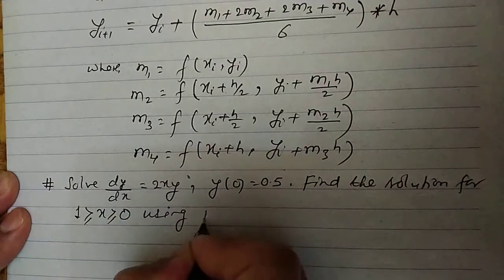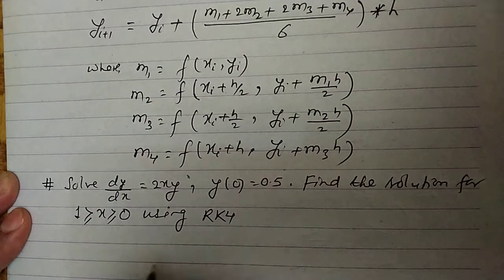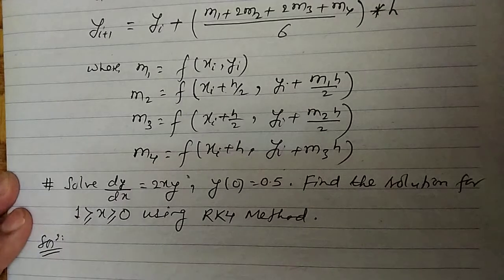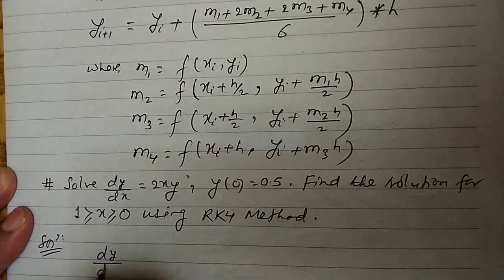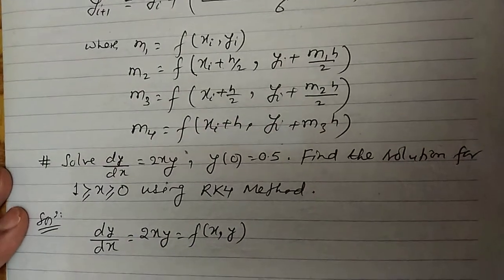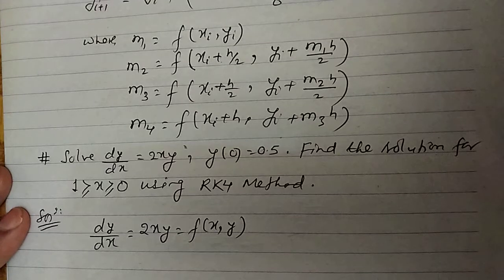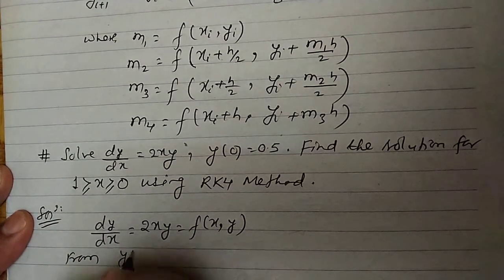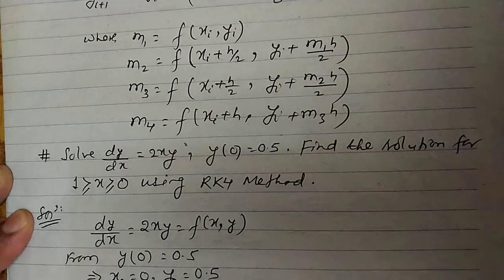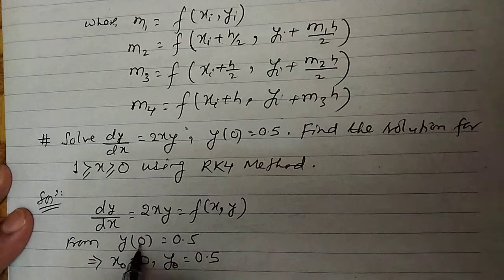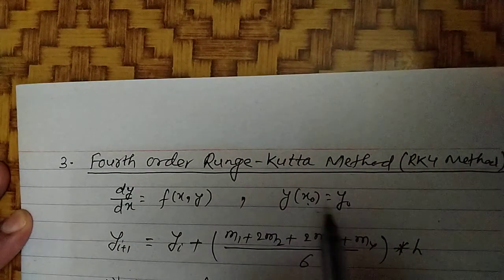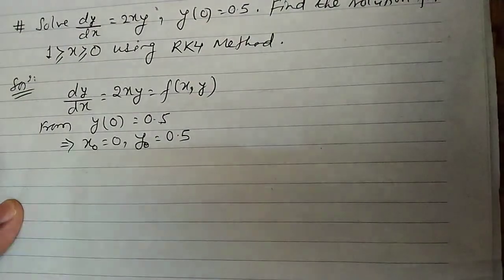Using the RK4 method, what is given: dy/dx = 2xy, and that is a function f(x,y). The initial condition is y(0) = 0.5, which means x0 = 0 and y0 = 0.5.